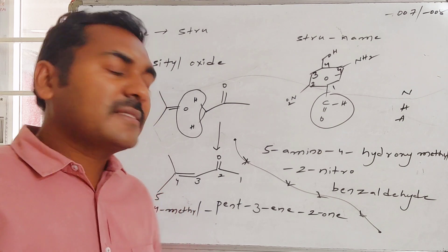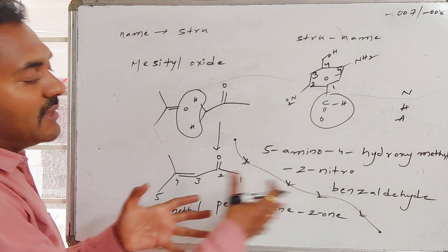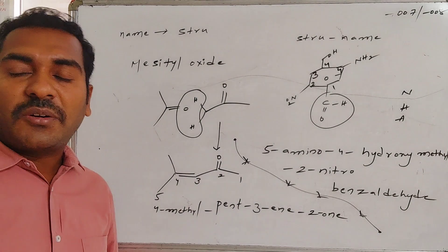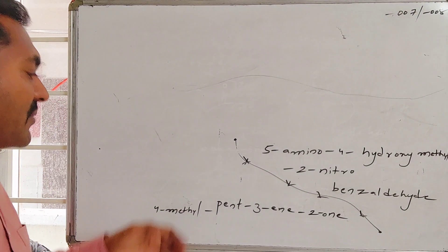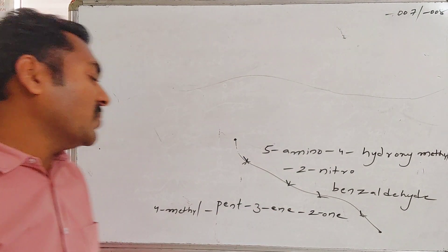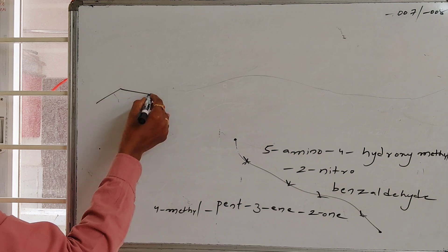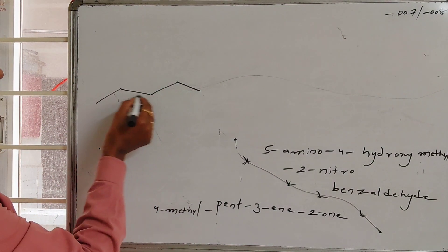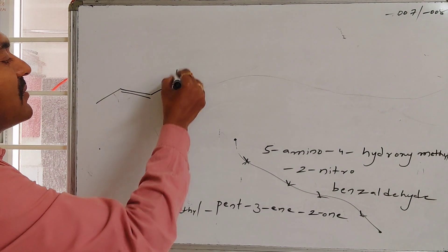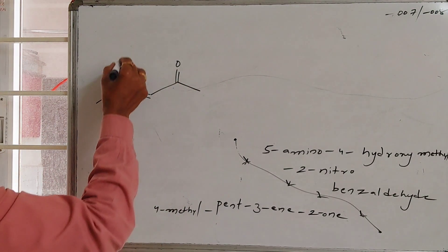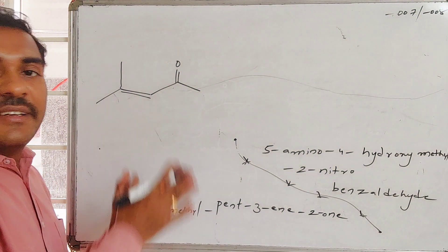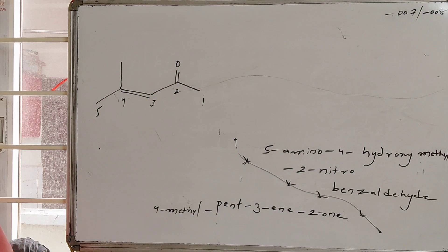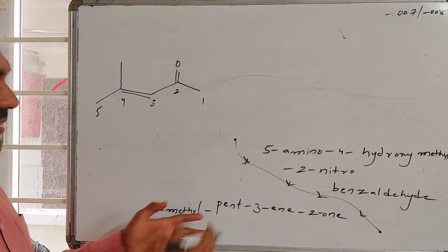Now we will regenerate the original structures from the IUPAC names. Starting with 4-methyl-pent-3-en-2-one: it is a pentane system with five carbons. On the third carbon it has a double bond, on the second carbon it has a keto functional group, and at the fourth position it has a methyl group. This regenerates the structure of mesityl oxide, which is consistent with what we had before.